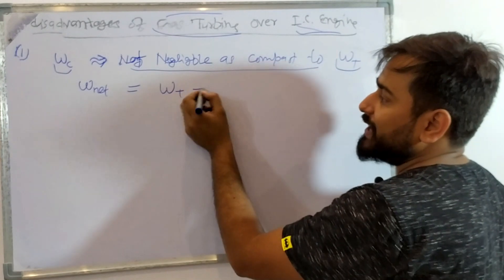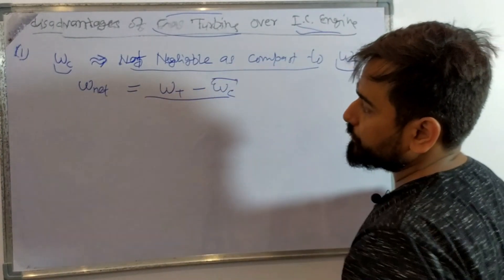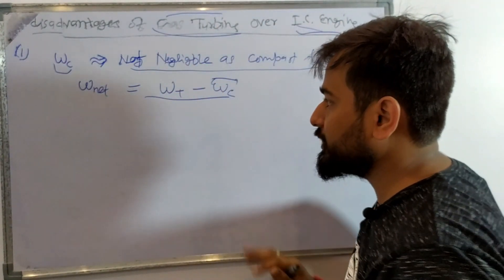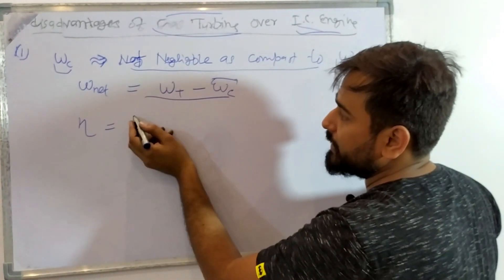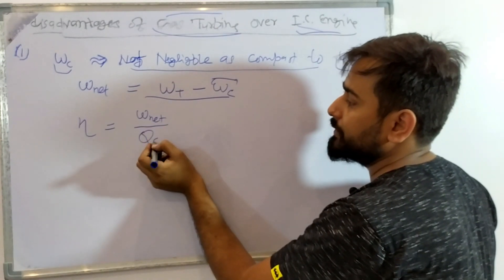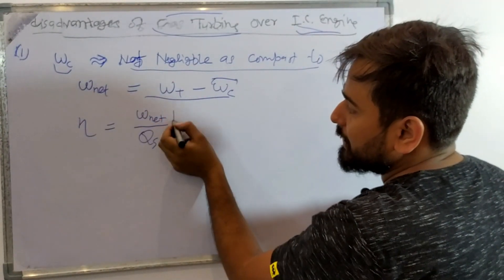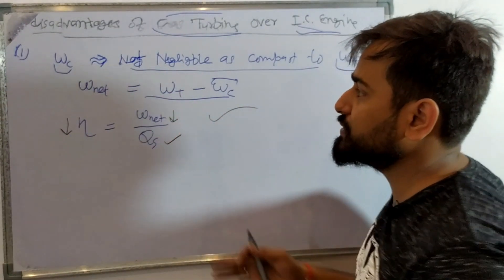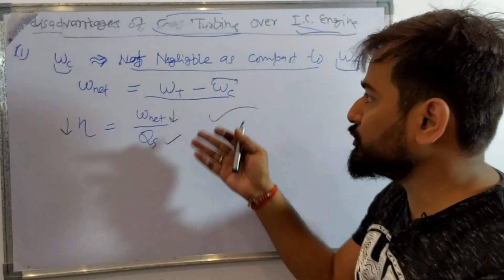The net work is W of turbine minus W of compressor. Here some work has been reduced. So if we talk about efficiency — it is net work upon heat supplied. The net work is reduced because of the compressor work. If the net work is reduced while heat supply remains the same, our efficiency will be lower. The efficiency is lower because the compressor work is used.